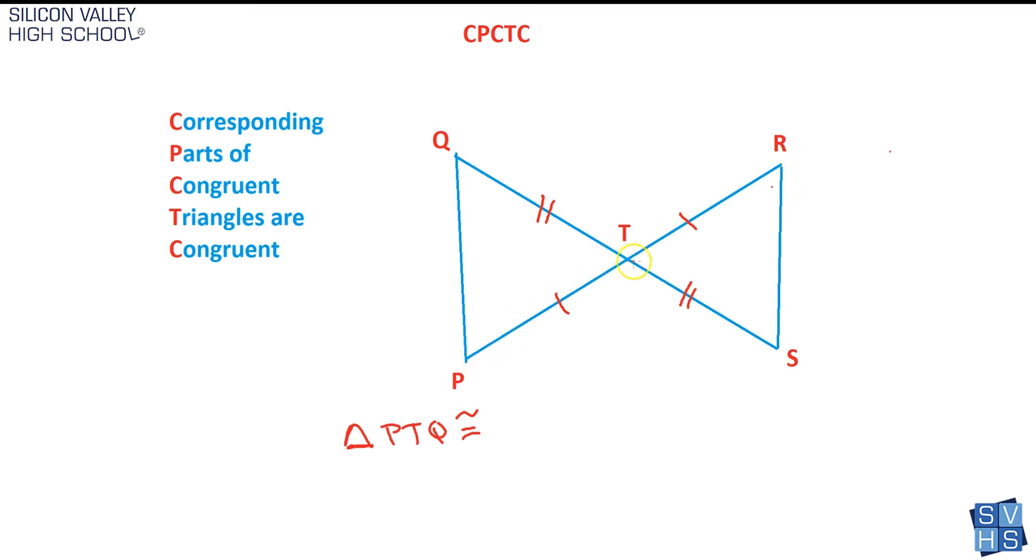Be careful. This goes single tick mark to inner angle guy to double. If I accidentally did this, it'd be wrong—this goes double to inner angle to single. So no, that's incorrect. If I do PTQ, I have to do RTS: single to corner to double. You just have to be really careful with the order. That is cool though, because once you get the order right, these are cheat sheets. Angle P is congruent to angle R, T is congruent to T, and Q is congruent to S. The sides are also congruent.